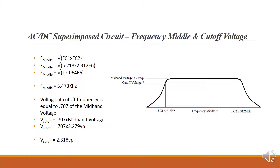Now that we have FC1 and FC2, we can calculate frequency middle. F middle equals the square root of FC1 times FC2. For this circuit, F middle is 3.473 kilohertz.